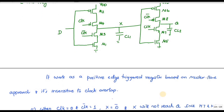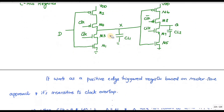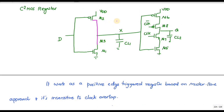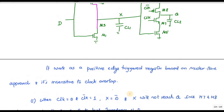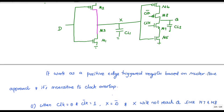When the clock is zero and clock-bar is one, M4 and M3 will conduct. This forms a short circuit path that acts as an inverter, so X equals D-bar. The master stage is transparent during this phase.